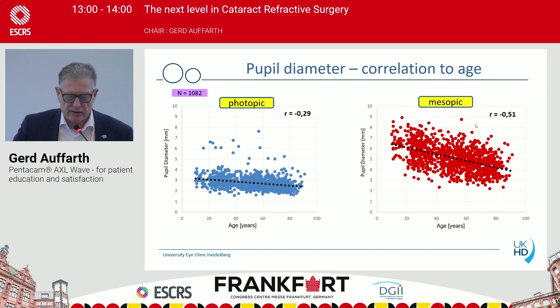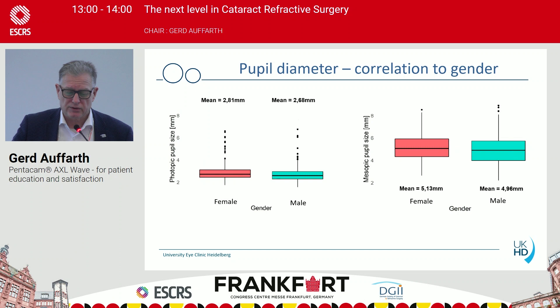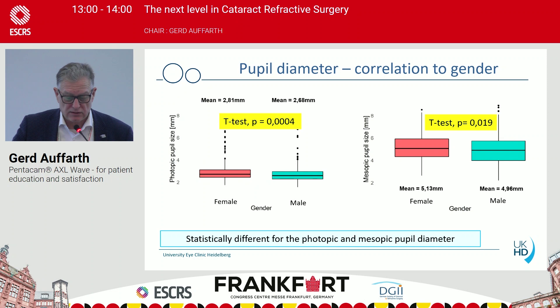If we look at these values and correlate pupil diameter with age — we can see under photopic conditions there is no strong correlation, but under mesopic conditions we have a strong correlation with age. The older the patient, the smaller the pupil gets under mesopic conditions. If you are in your 90s, you rarely have a pupil larger than three millimeters. We also saw a gender difference: women have a larger pupil on average compared to men, and this was significantly different.